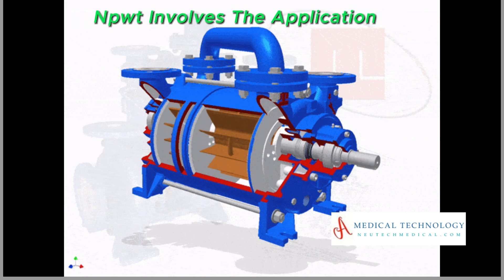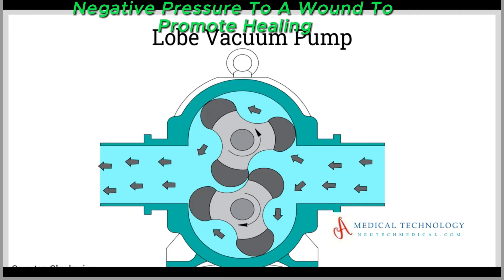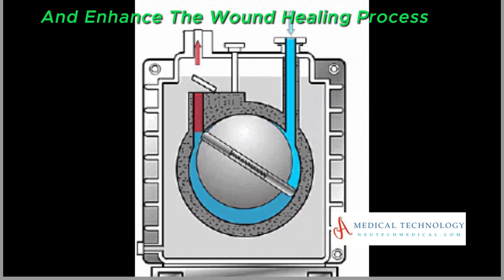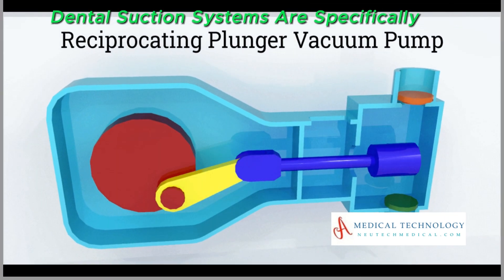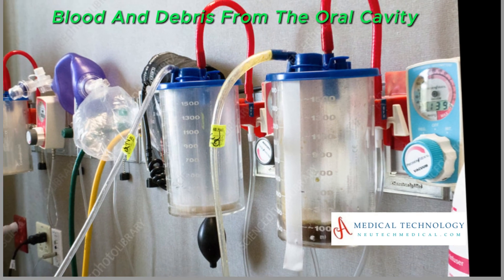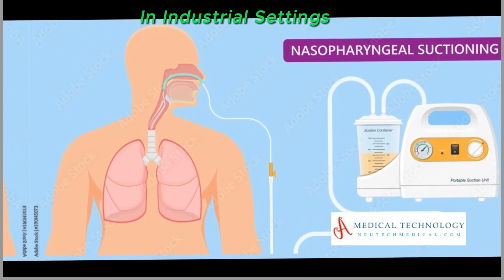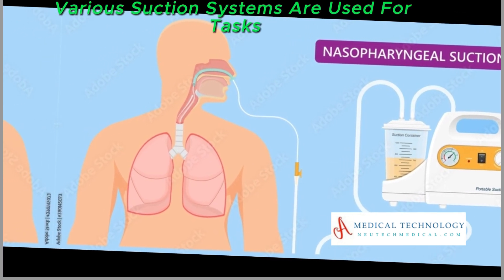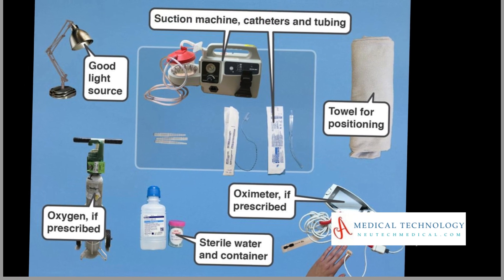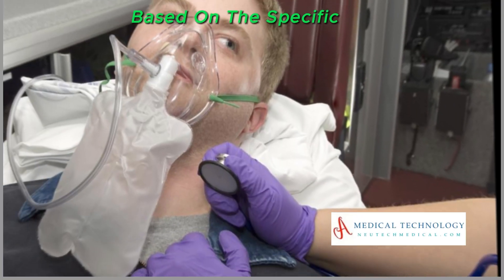Negative pressure wound therapy (NPWT) involves the application of controlled negative pressure to a wound to promote healing. Suction is used to remove excess fluids and enhance the wound healing process. Dental suction systems are specifically designed for use in dental procedures, removing saliva, blood, and debris from the oral cavity to maintain a clear working environment. In industrial settings, various suction systems are used for tasks such as material handling, dust collection, or the removal of pollutants, and may differ in design and capacity based on the specific application.